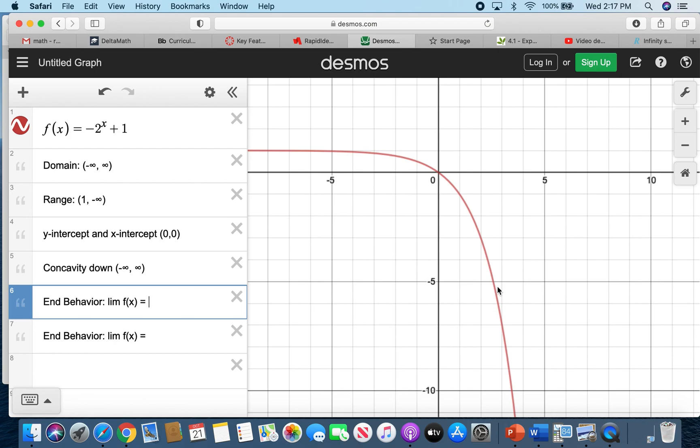So what happens to your y as your x is going to the left? And as you can see, it approaches positive 1. So as x approaches negative infinity, your y is approaching positive 1.